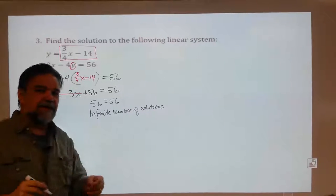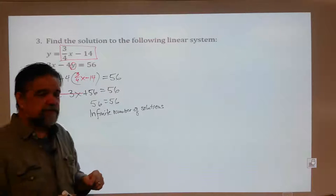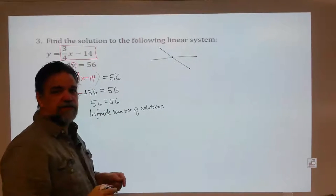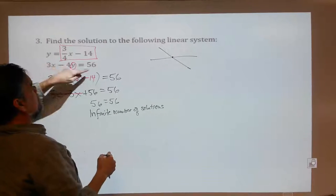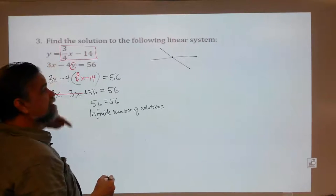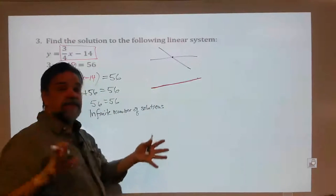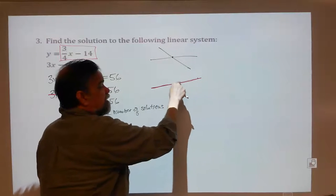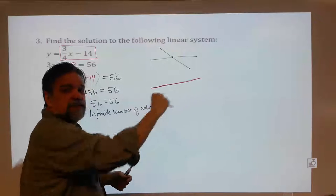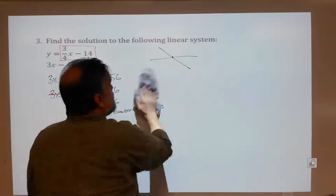What does this mean graphically? We're finding the x and y that make these two equations work, and I find I need an x and y that will make 56 equal 56. Any x will make that true — I have an infinite number of solutions. Now, that doesn't mean any x and any y will solve this system. If you solve the second equation for y, you get the first equation. They're the same line — one line sitting right on top of itself. So any x-y on this line will work. It's a weird example, but you do see these sometimes.